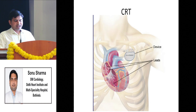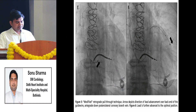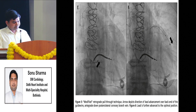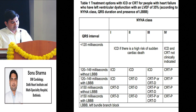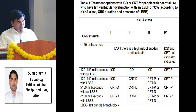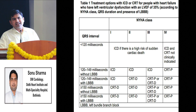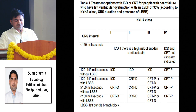For LV dysfunction, the device that can increase LV ejection fraction is CRTD (cardiac resynchronization therapy defibrillator). It has three leads. CRTD is recommended for patients with QRS duration more than 150 milliseconds and LV EF less than 35%. These are the patients who will benefit most from CRT.